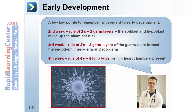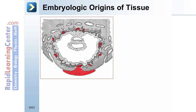And in the fourth week, it's the rule of fours: four limb buds and four heart chambers are present. The three embryologic tissues of origin are the ectoderm, mesoderm, and endoderm.